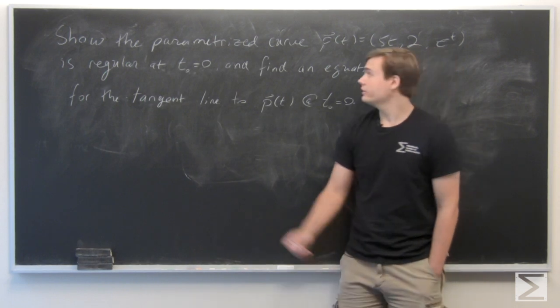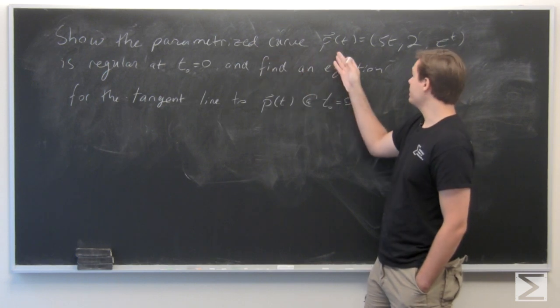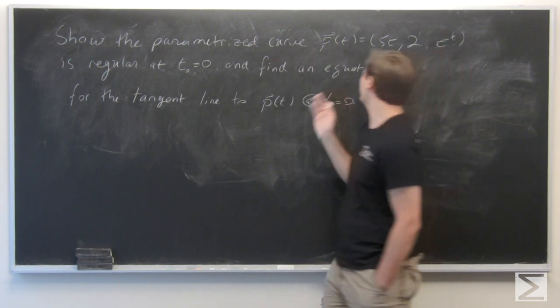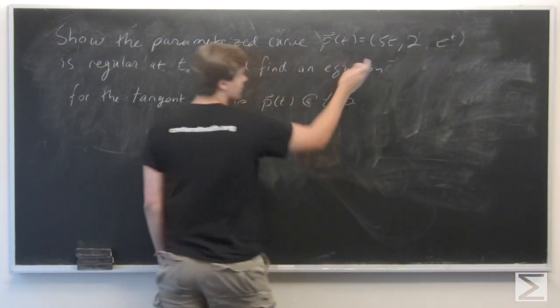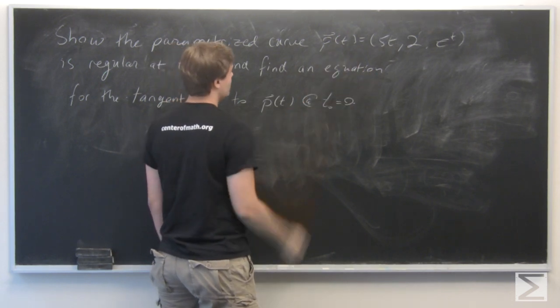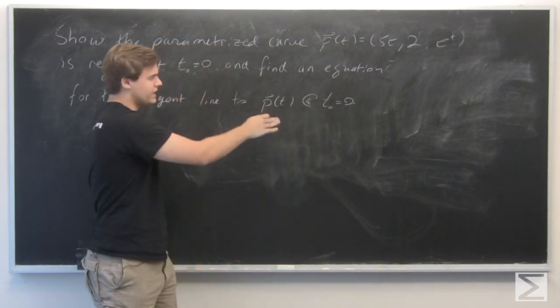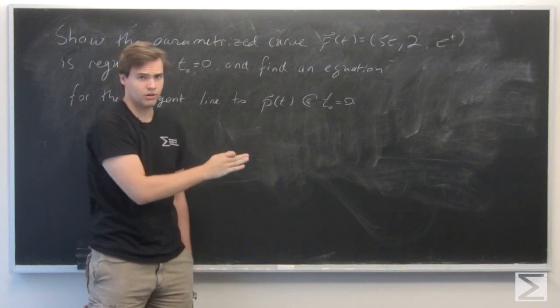In this problem, we're given a parameterized curve p of t equals (5t, 2, e to the t). And we're given a specific time t₀ equals 0.